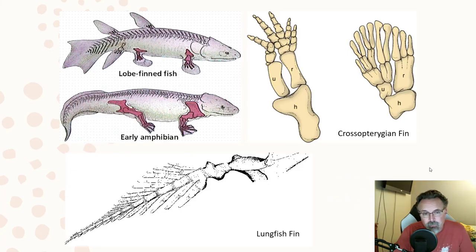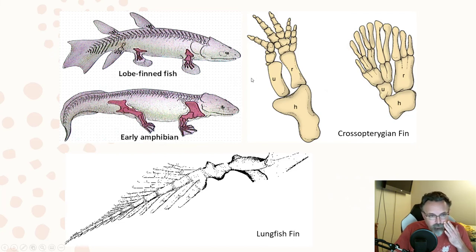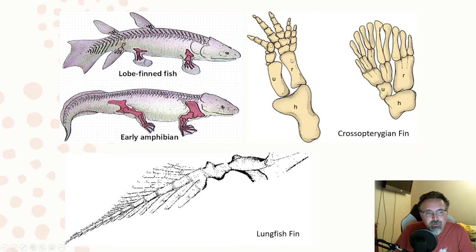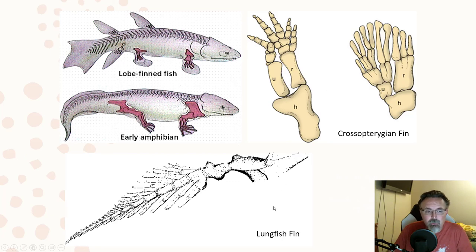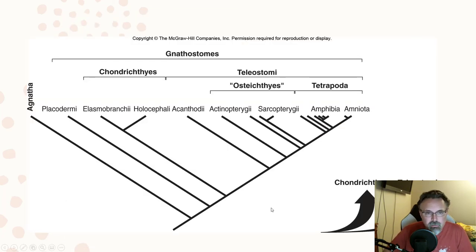Looking at the limbs of the crossopterygians, you can see they are very close to the tetrapods. Comparing a typical lobe-finned fish to a tetrapod, you can see analogous structures — H, U, and R, plus carpal bones — that are very similar to those of an early amphibian. Their head structure is very similar too. Basically, you take the fins off and you've got yourself a lobe-finned fish that resembles a primitive tetrapod. The DNA matches up pretty well, and looking at a cladogram makes it even more obvious that these animals are more closely related to the tetrapods.